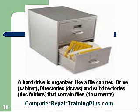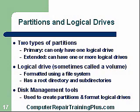Partitions and logical drives: there are two types of partitions — primary and extended. The primary can only have one logical drive; normally the primary would be drive C. In an extended partition we could have more than one logical drive — D, E, F, as many as we need. Logical drives are sometimes called a volume. We can set up volumes that span over several drives. Formatting uses a file system and has a root directory and subdirectories. There are file management tools to set up partitions and format logical drives, and Windows has its own file management utility.